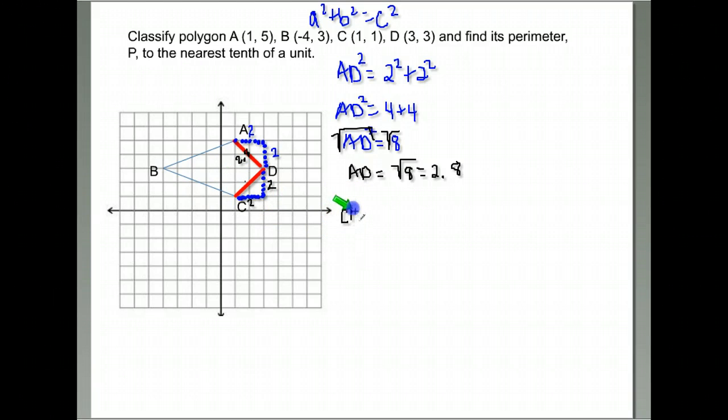My hypotenuse, CD squared equals one of the legs squared. One leg was length two plus the other leg, which was also two squared. If I simplify further, two squared is four, two squared is four. You can see I have exactly the same problem I was working with before. Four plus four is eight.